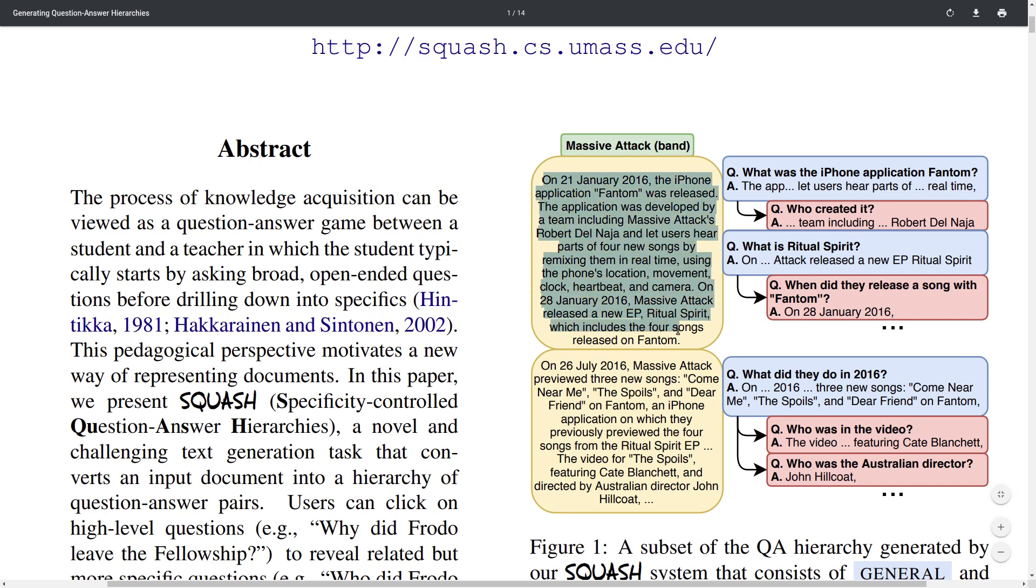Given that you have an input paragraph from an article on Wikipedia, for example, in this case it's about the band called Massive Attack, they come up with an approach which can generate a hierarchy consisting of first general questions such as what was the iPhone application Phantom, and as well as an answer for this. So this iPhone application is actually part of this paragraph, it was developed by someone from Massive Attack.